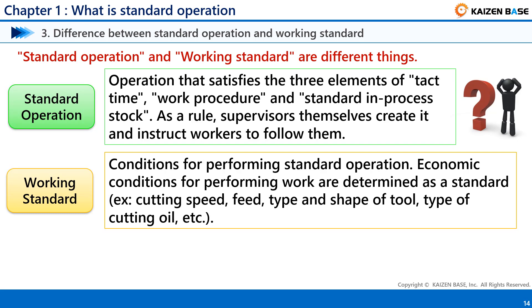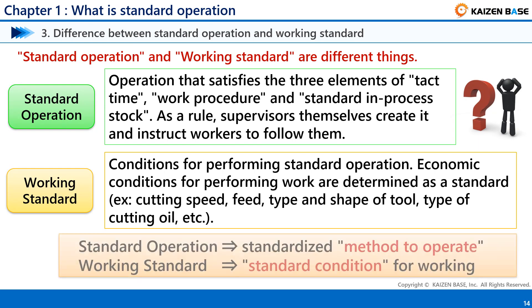For example, Working Standards include cutting speed, feed, type and shape of tool, type of cutting oil, etc. To summarize: Standard Operation is the standardized method to operate, while Working Standard is the standard condition for working.